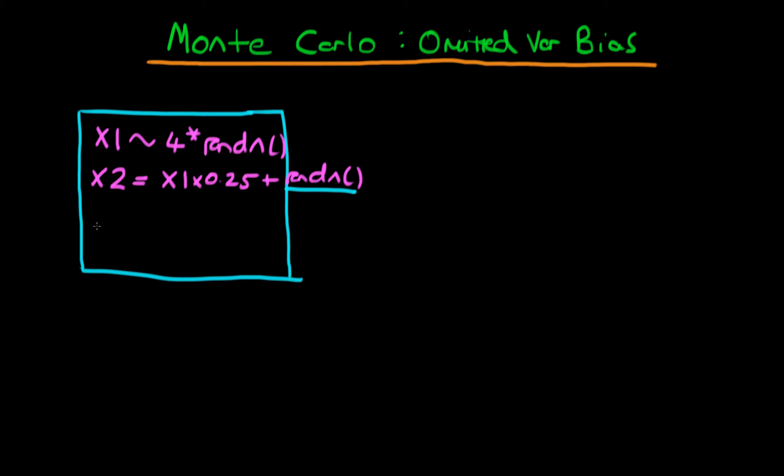And then what we're going to do is we're going to use these two independent variables to generate a set of Y. So Y here is going to be equal to alpha plus beta 1 times X1, plus beta 2 times X2, plus some error, which we're going to have a random normal error as well on the end of Y. So it's not perfectly determined by X1 and X2.